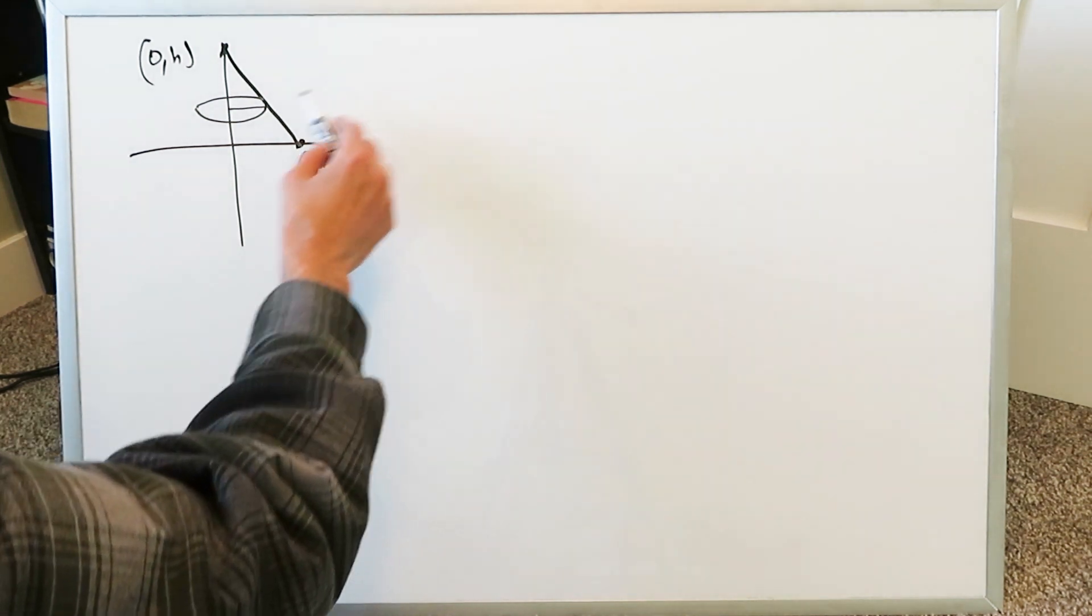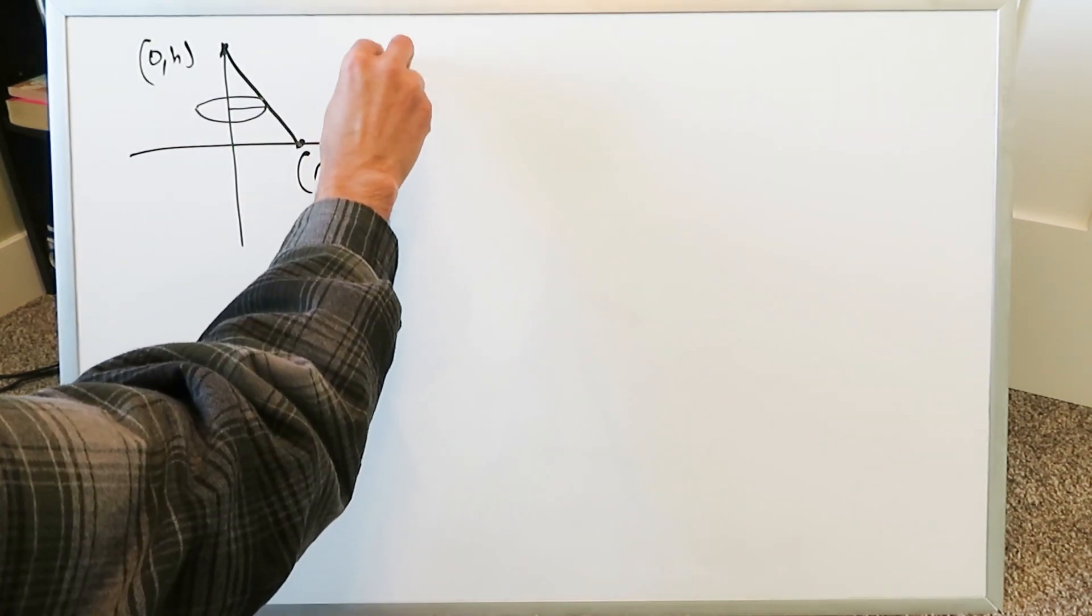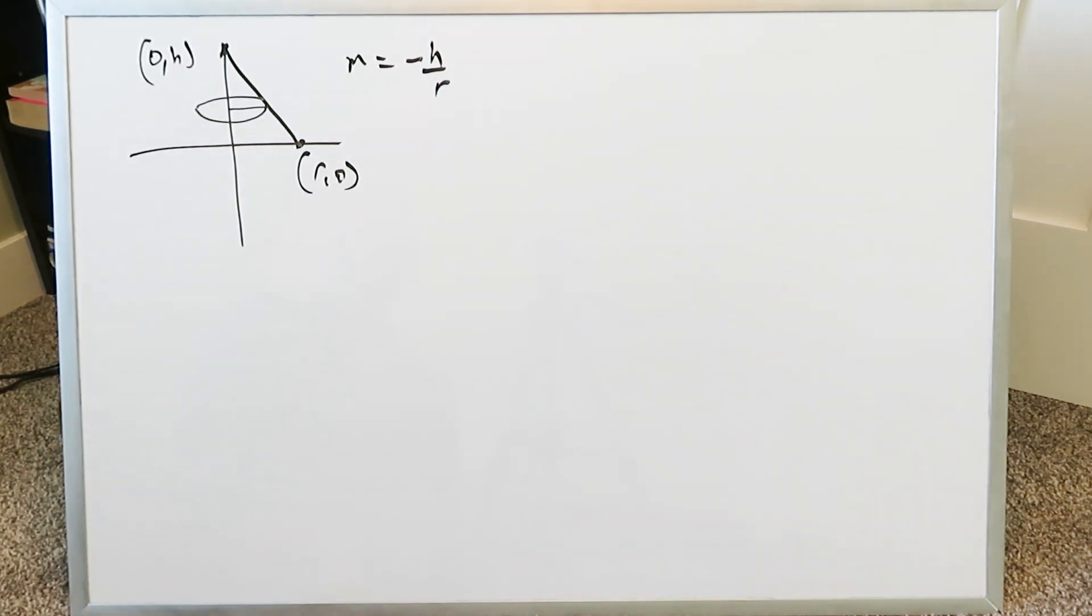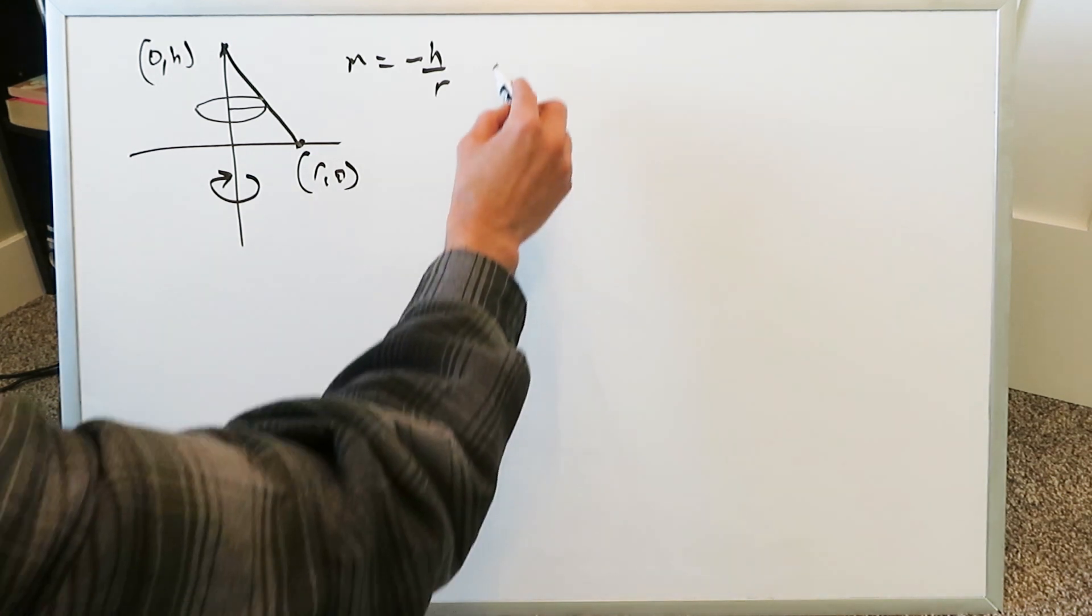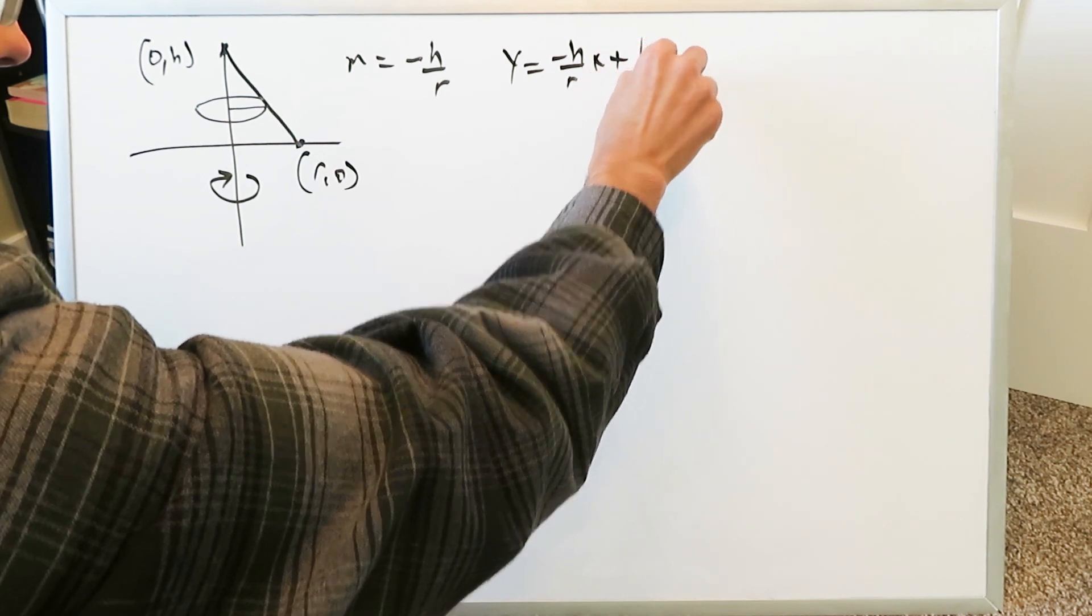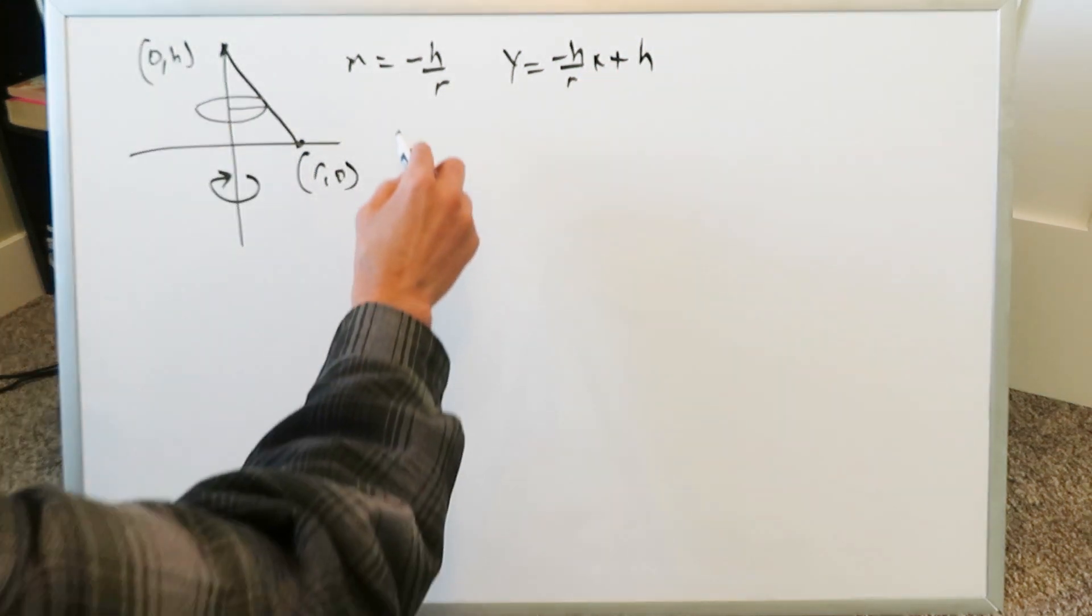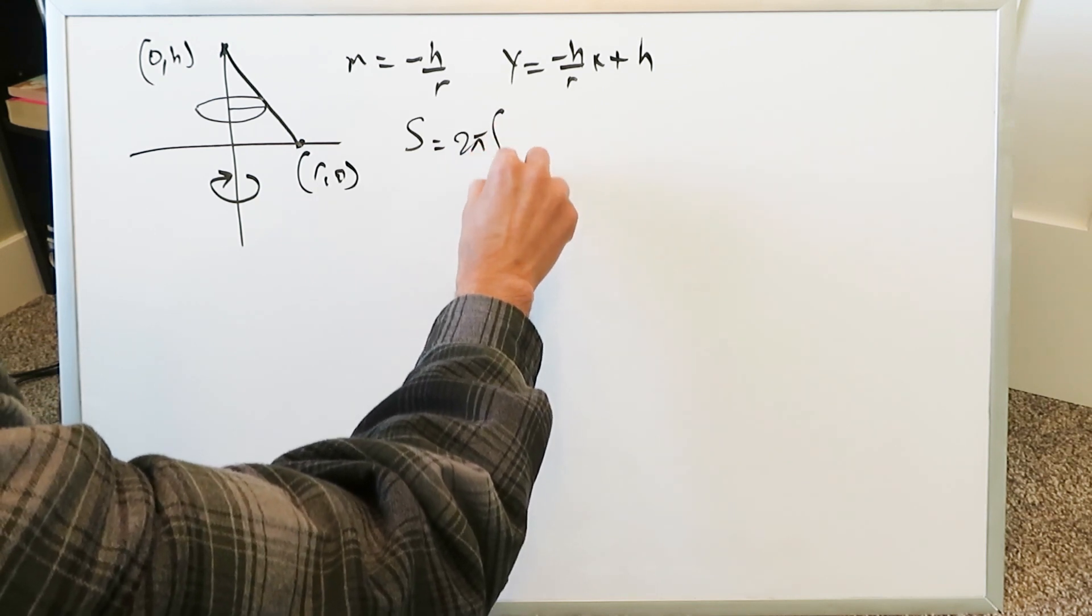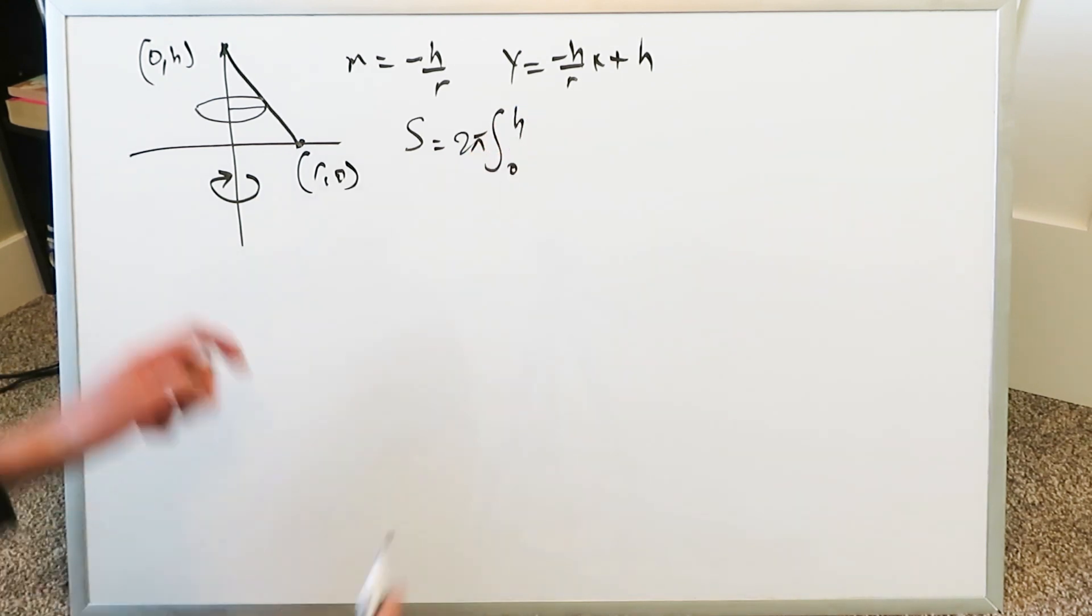You have to take the equation of this line. You have two points and you determine the slope of these two points and you end up having minus h over r. Now you have to determine an equation of this because we're going to do a rotation here around the y-axis. Your equation here is y equals minus h over r x plus your y-intercept which is h. The equation form for the surface area is 2 pi, lower limit 0, upper limit h.